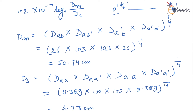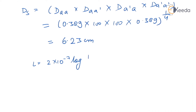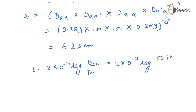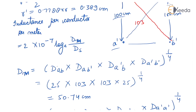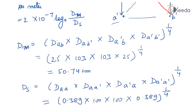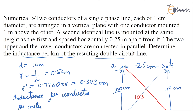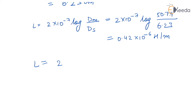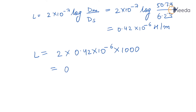Now putting the values of dm and ds into L = 2 × 10⁻⁷ × ln(dm / ds): L = 2 × 10⁻⁷ × ln(50.74 / 6.23) = 0.42 × 10⁻⁶ H per meter. To convert to per kilometer for the double circuit line: L = 2 × 0.42 × 10⁻⁶ × 1000 = 0.84 mH per kilometer.